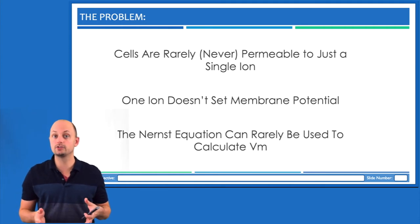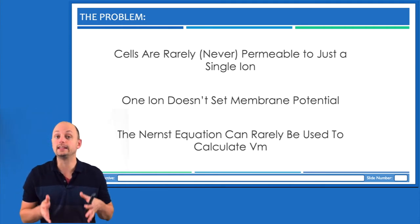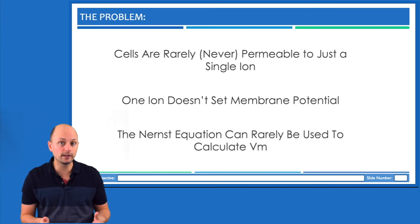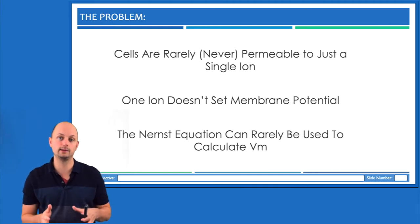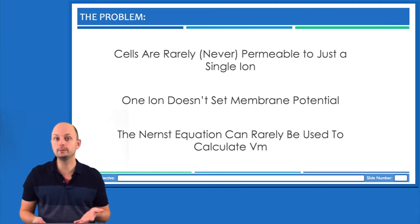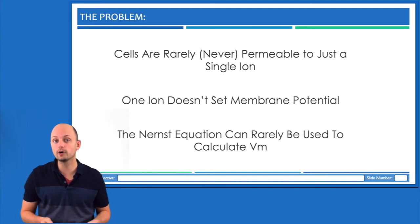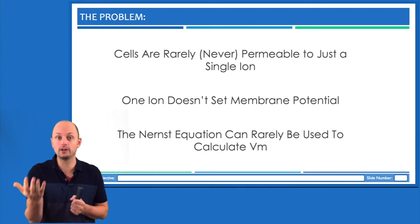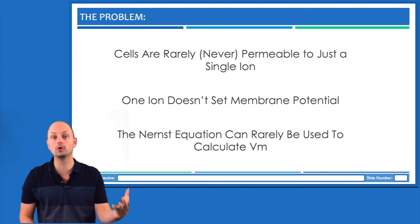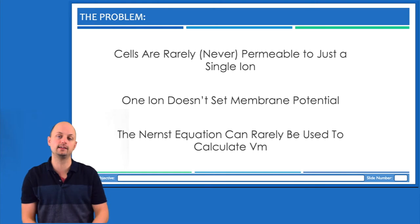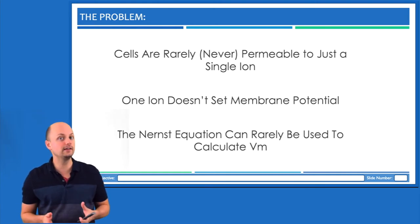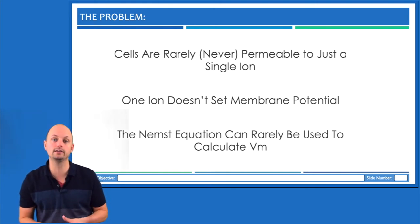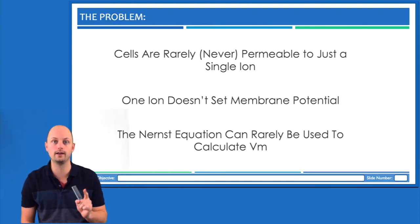Even though equilibrium potentials are really important, equilibrium potential and membrane potential are not the same thing. This is because our cells are never permeable to just one ion. At any given point we have potassium permeability, sodium permeability, and chloride permeability all at the exact same time. So the Nernst equation can't be used to calculate membrane potential because it only takes into account one ion.